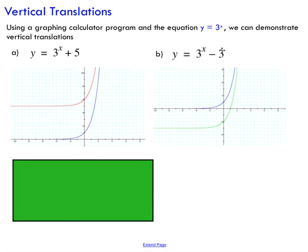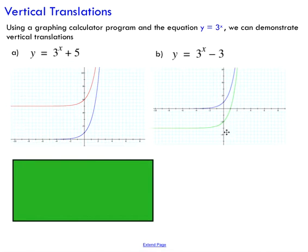Looking at shifting downwards — if we subtract a number at the end of our function, we move the function down by that number of units. You can see I'm shifting this function down by 3 units. Instead of passing through (0, 1), it now passes through (0, negative 2). We've shifted that point down by 3.